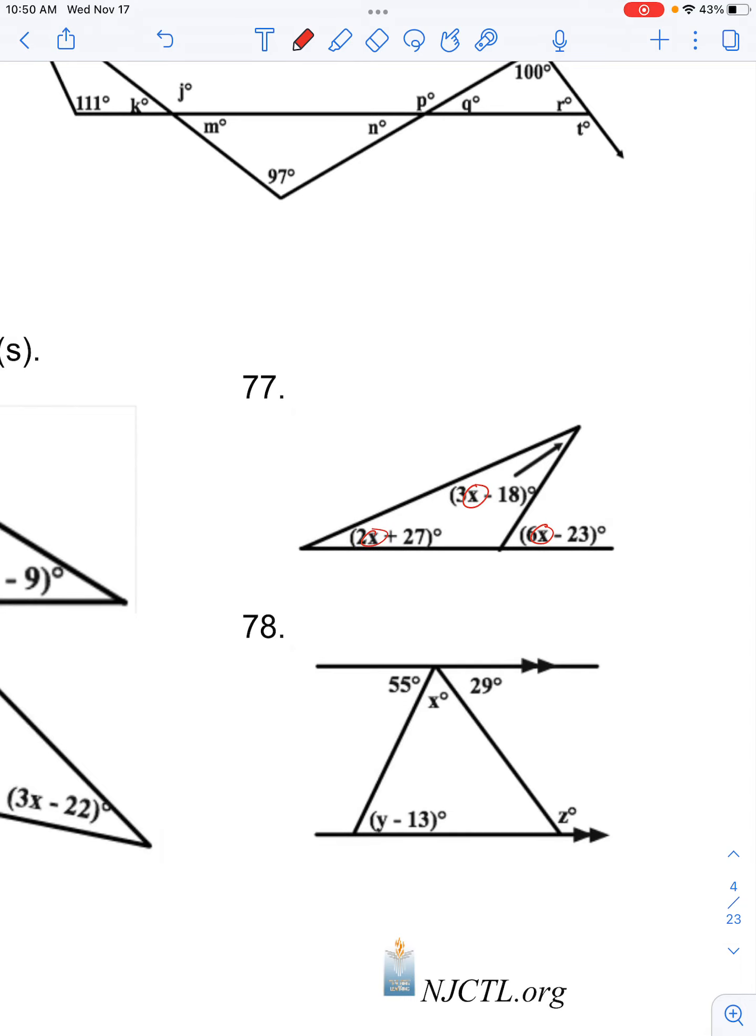We know that our exterior angle is 6x minus 23 degrees, and our remote interior angles are this angle and this angle. So we have 2x plus 27 degrees plus 3x minus 18 degrees is going to be equal to the exterior angle.